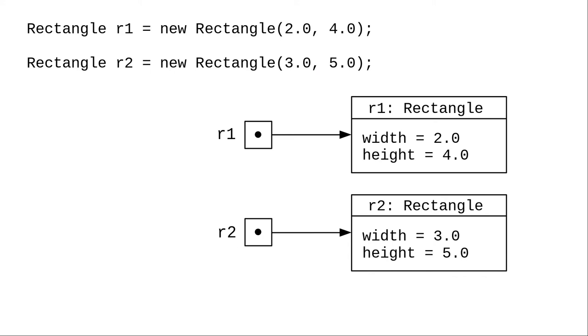But when we create objects, the variables hold references to the memory area that contains the data. Now, what happens when we do this assignment that says r2 is assigned r1?